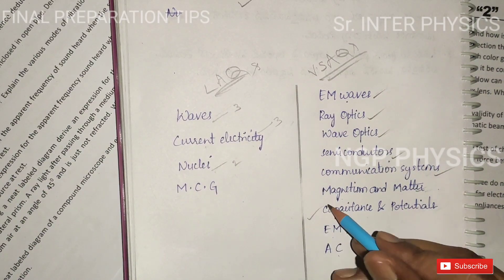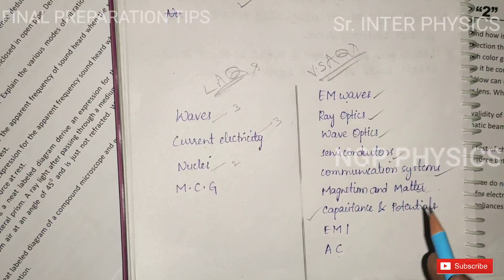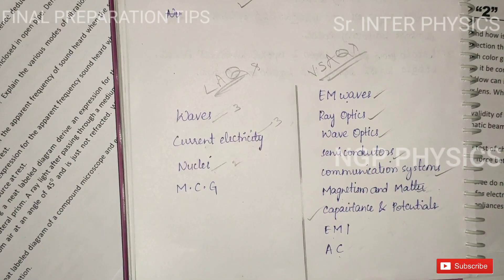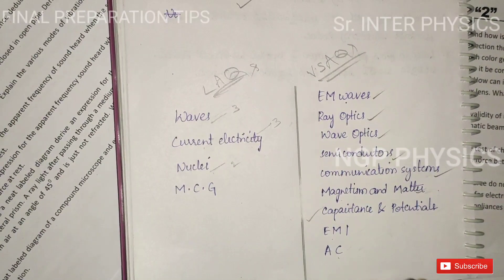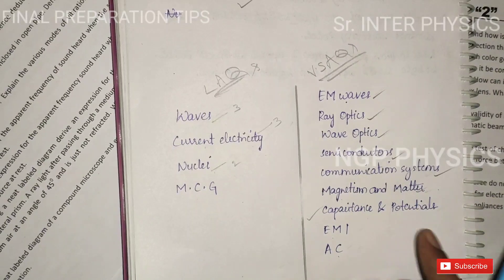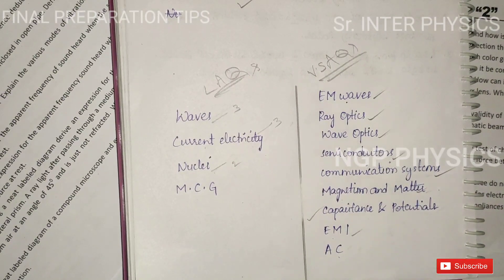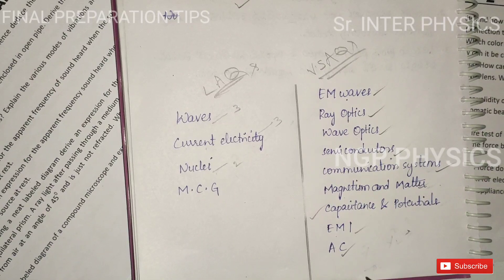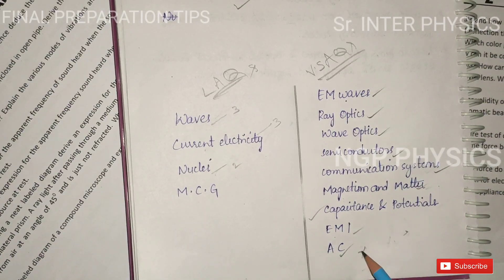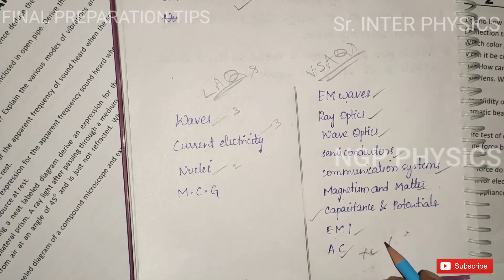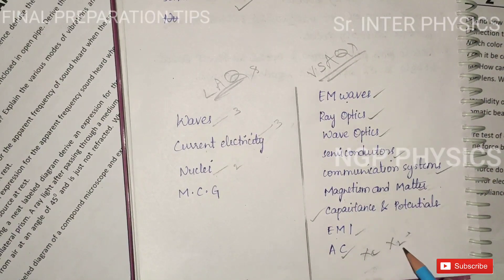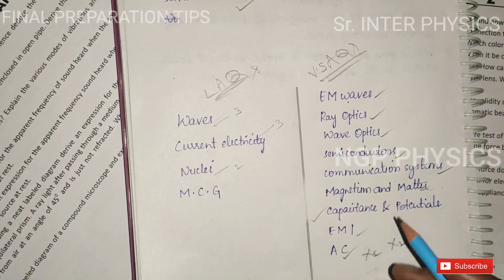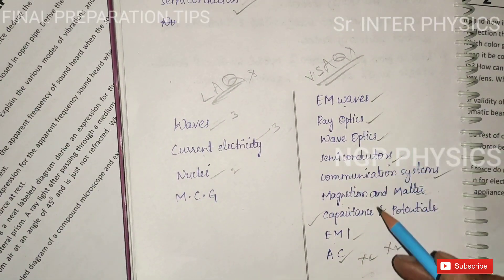For capacitors: you will need to know the parallel capacitor formula, or capacitors connected in series and parallel questions. Next, the EMI topic. For AC, you will need to know AC inductive capacitance and inductive reactance, and the LCR resonance condition in AC circuits.